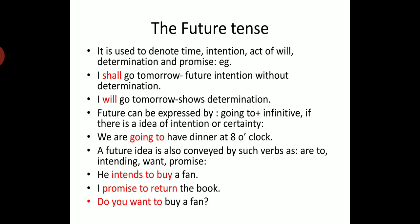To summarize: future tense denotes time, intention, act of will, and determination. 'Shall' denotes future intention but no determination, 'will' shows determination, and 'going to' shows certainty.